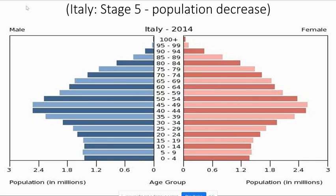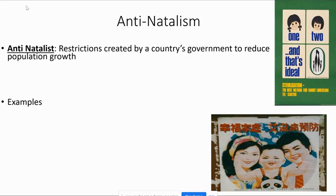Italy's situation is concerning — they're starting to have fewer and fewer people in the lower cohorts. That's going to be tough on their economy because they have to care for a lot of elderly people. Elderly care requires expensive healthcare, and taxpayers will have to pay for it.